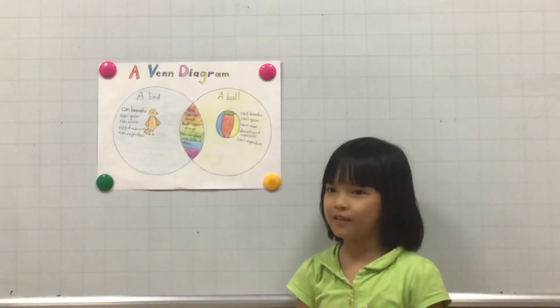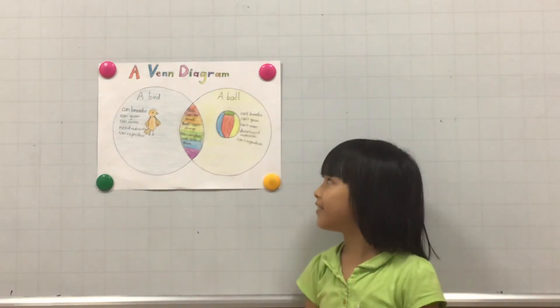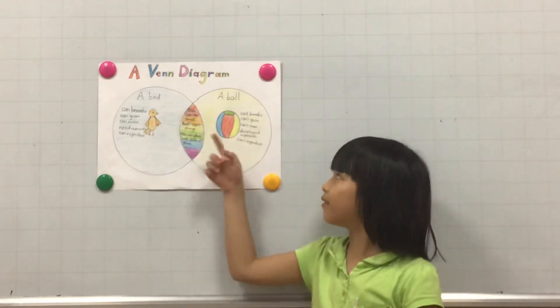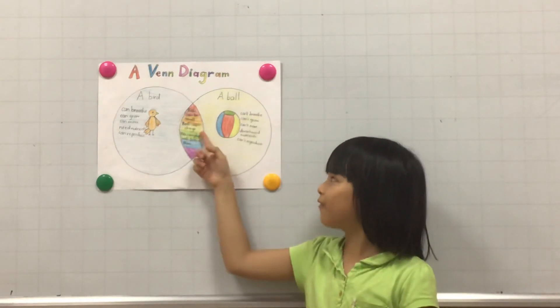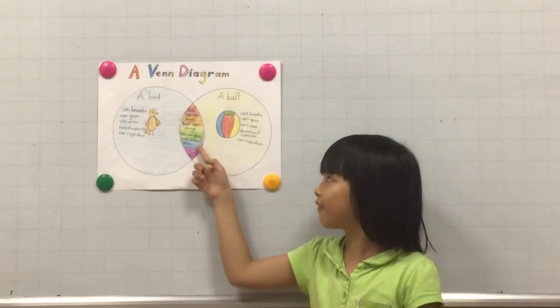Now I'm going to tell you about the similarities about the bird and the ball. The bird and the ball can be small. They both can change and we can play with both of them.